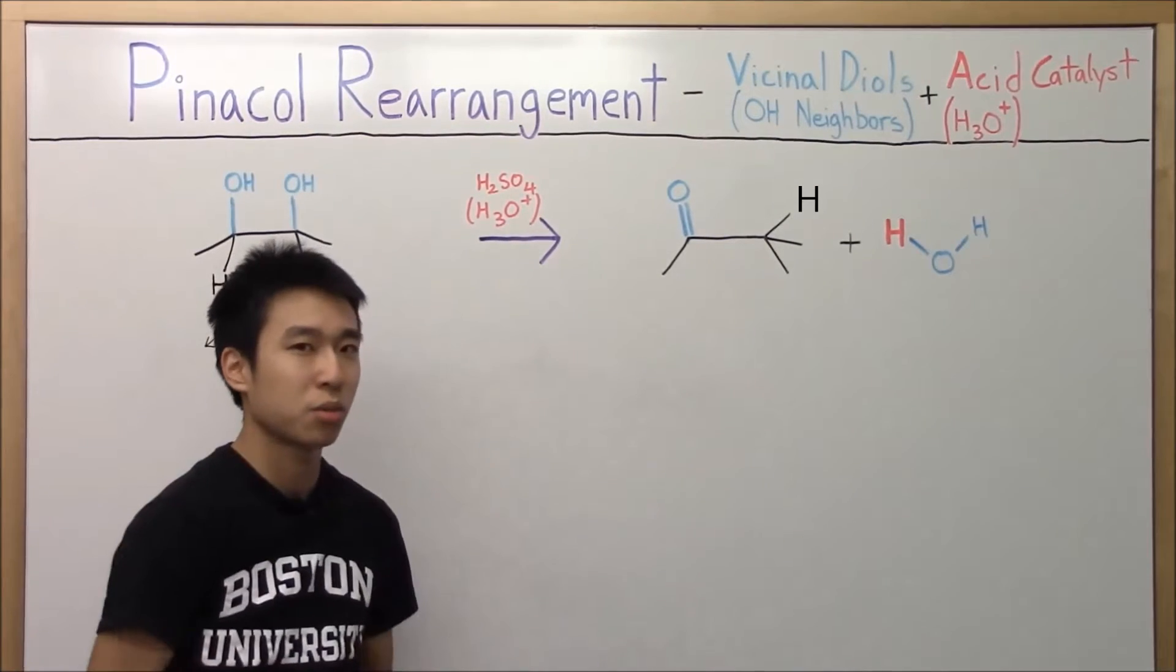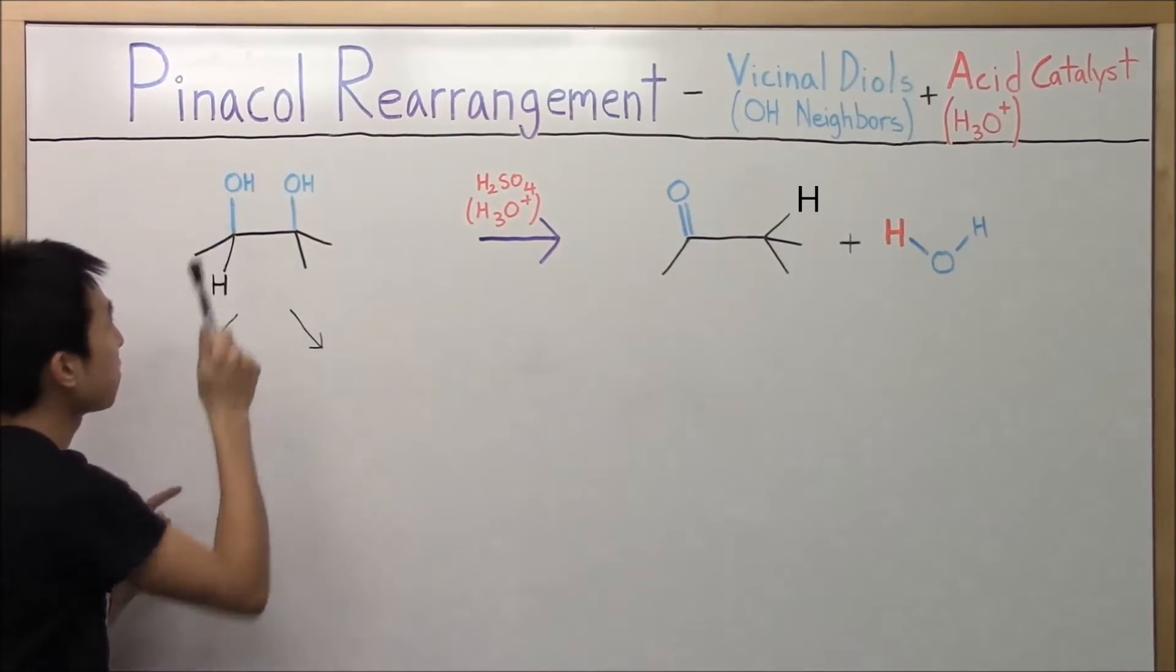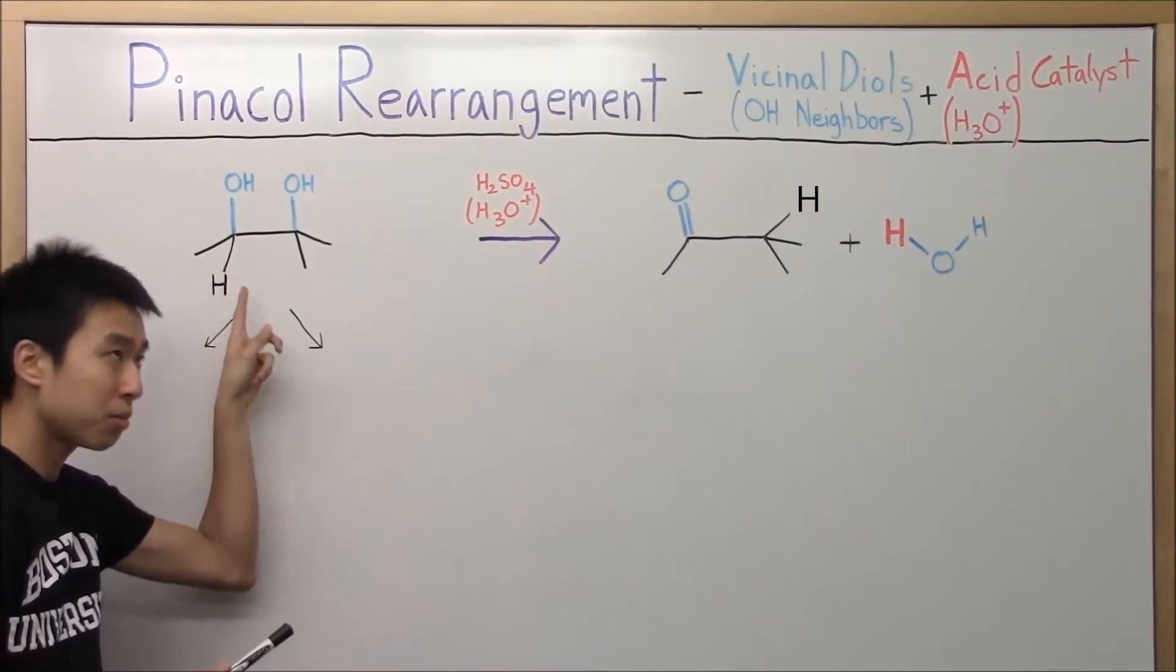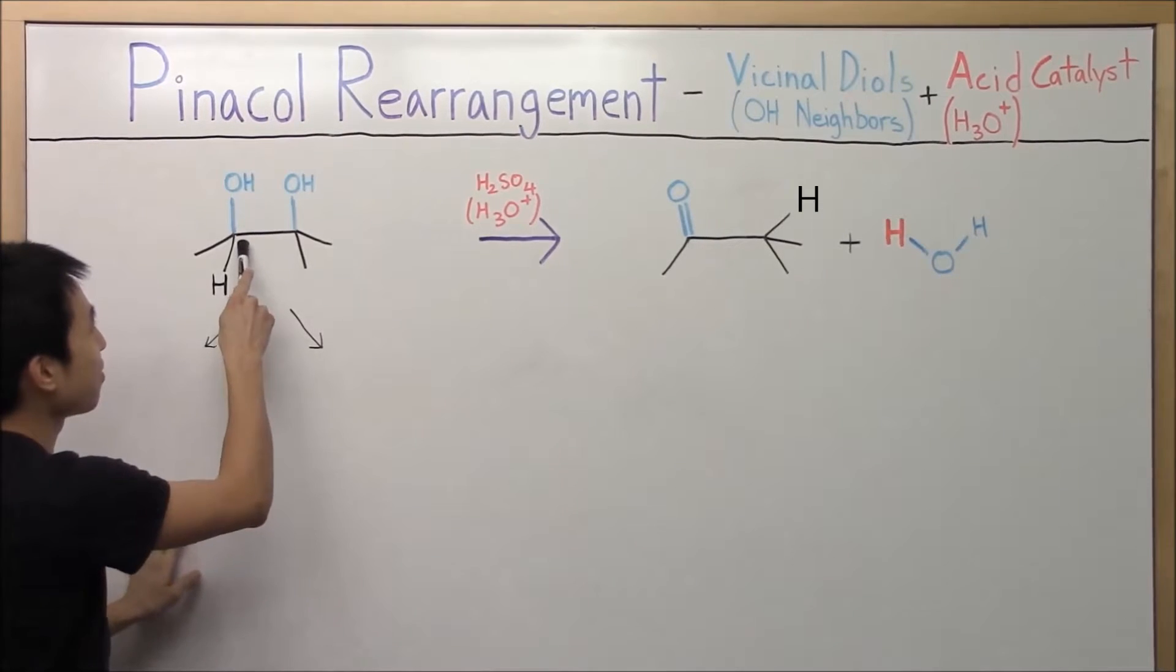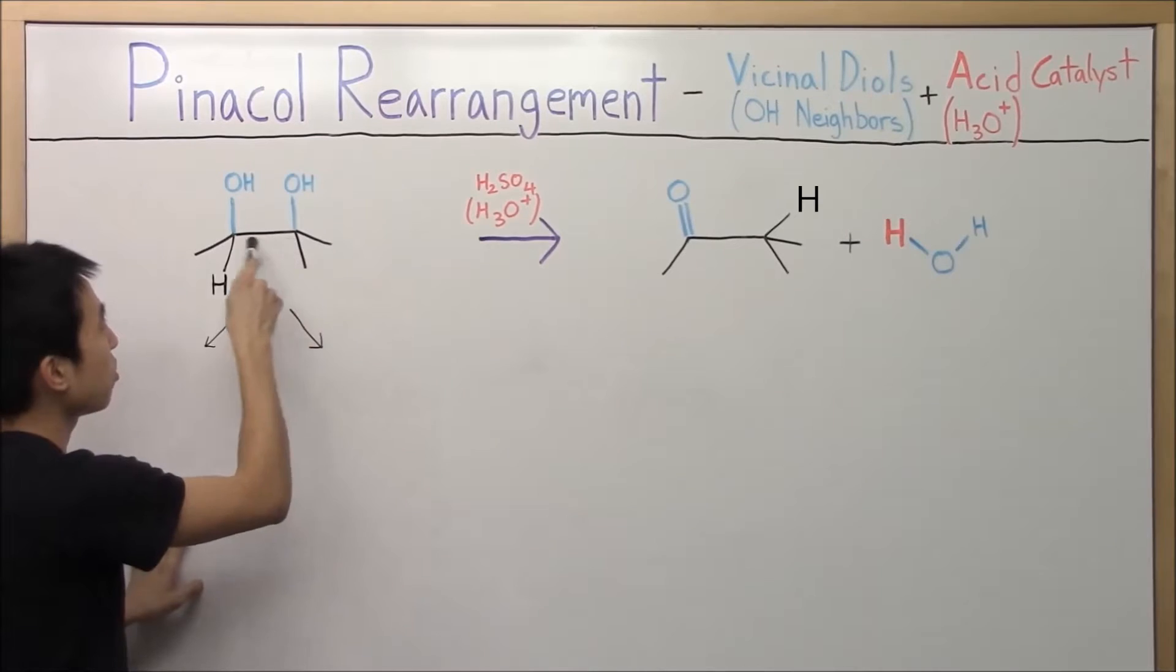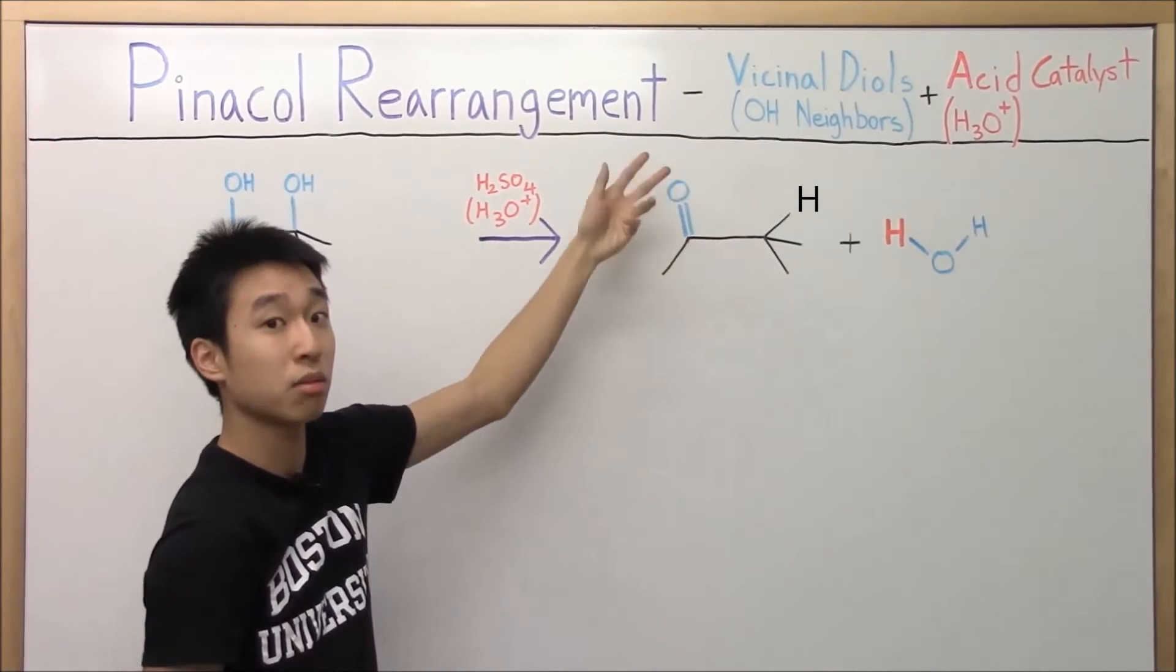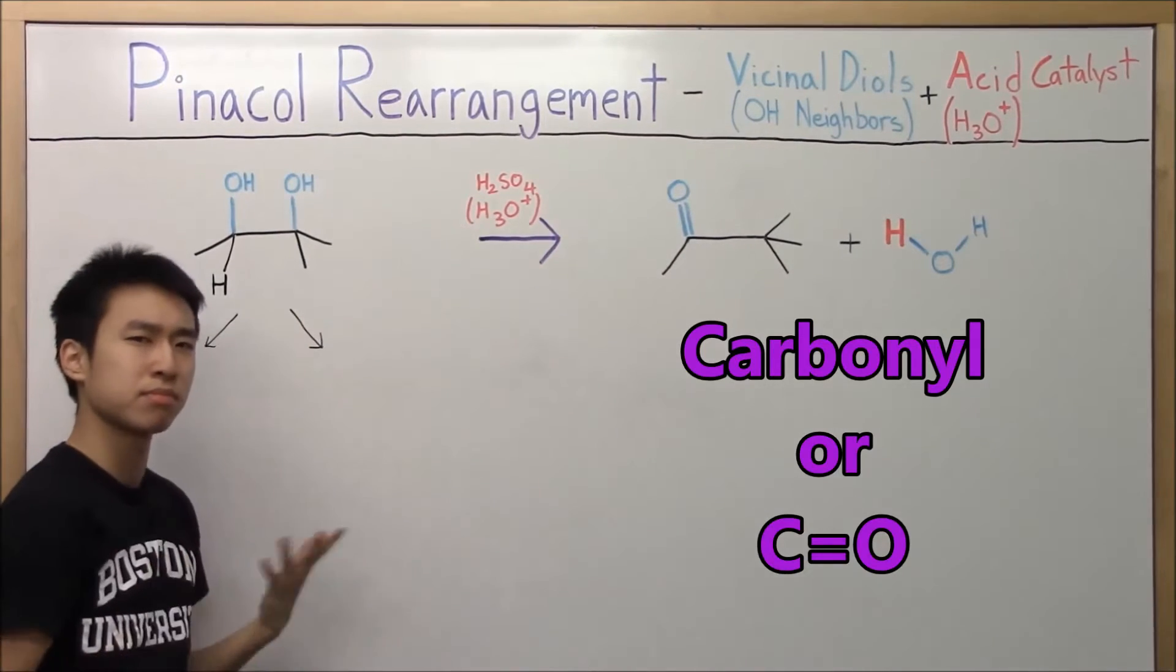But anyways, so why do we get this product, right? It looks like this time only the side that's less stable or less substituted, meaning that the carbon is bound to less carbons. So this one is only bound to two carbons versus this one, it's a carbon that's bound to one, two, three carbons. Only the less stable carbon turns into a C double bond O, or a carbonyl. Not this one. But why?